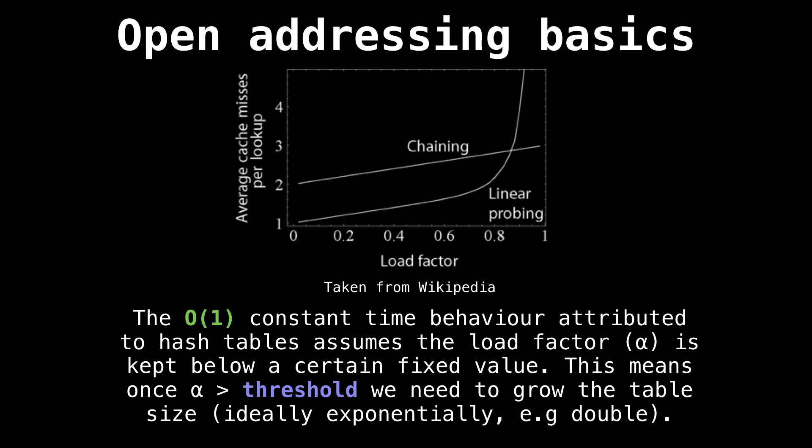We can see from the linear probing one is that once it gets to a certain threshold, it gets exponentially bad. So you don't want it to go anywhere near that 0.8 mark. In fact, we're going to be keeping it a lot lower than that usually.